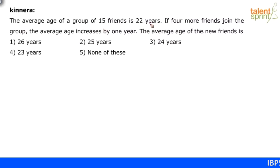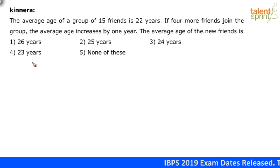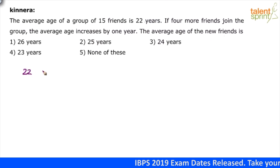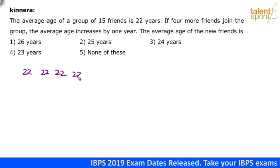The average age of a group of 15 friends is 22 years. Let us do it in a smart way, as discussed in the topic of averages. Average is nothing but equal distribution. So earlier we have 15 values and each value is 22.